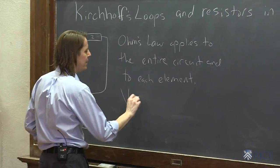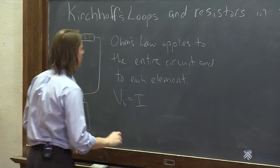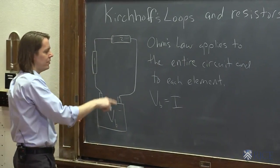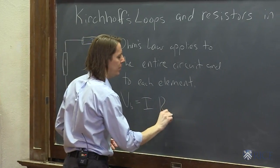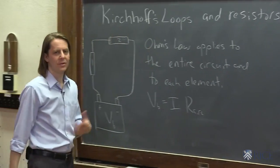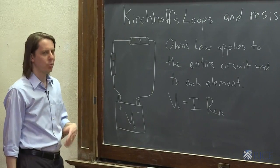We can say the voltage of the battery is the current in the circuit, and the whole circuit has to have the same current because it's just one loop, times the resistance. I'll put CIRC, the resistance of the entire circuit. Sometimes it's called the equivalent resistance.